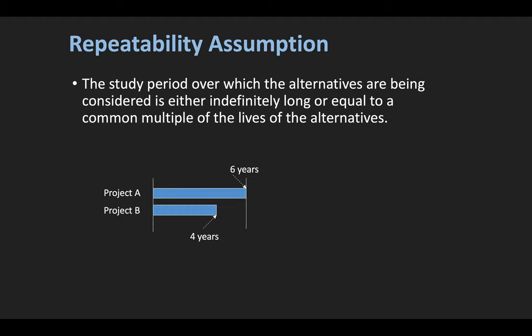Here's an example of how we apply the repeatability assumption. Let's say project A has six years and project B has four years — they do not end at the same time, making it hard to do the analysis directly. So what we do is extend them to a certain common period so they all end at the same time.